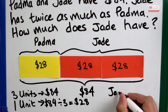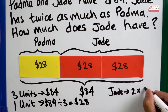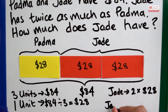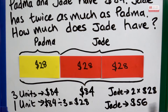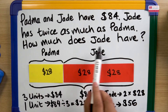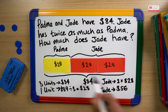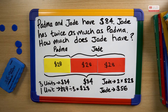So Jade has two lots of $28, which means Jade has $56 altogether. So the question — how much does Jade have? Jade has $56 and Padma has $28. Altogether they have $84.